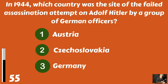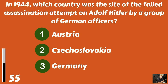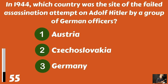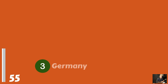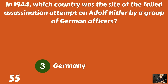In 1944, which country was the site of the failed assassination attempt on Adolf Hitler by a group of German officers? Austria? Czechoslovakia? Or Germany? It was Germany.